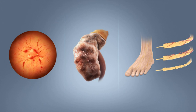Diabetes is due to either the pancreas not producing enough insulin, or the cells of the body not responding properly to the insulin produced. There are three main types of diabetes mellitus. Type 1 diabetes results from the pancreas's failure to produce enough insulin due to loss of beta cells. This form was previously referred to as insulin-dependent diabetes mellitus, IDDM, or juvenile diabetes.